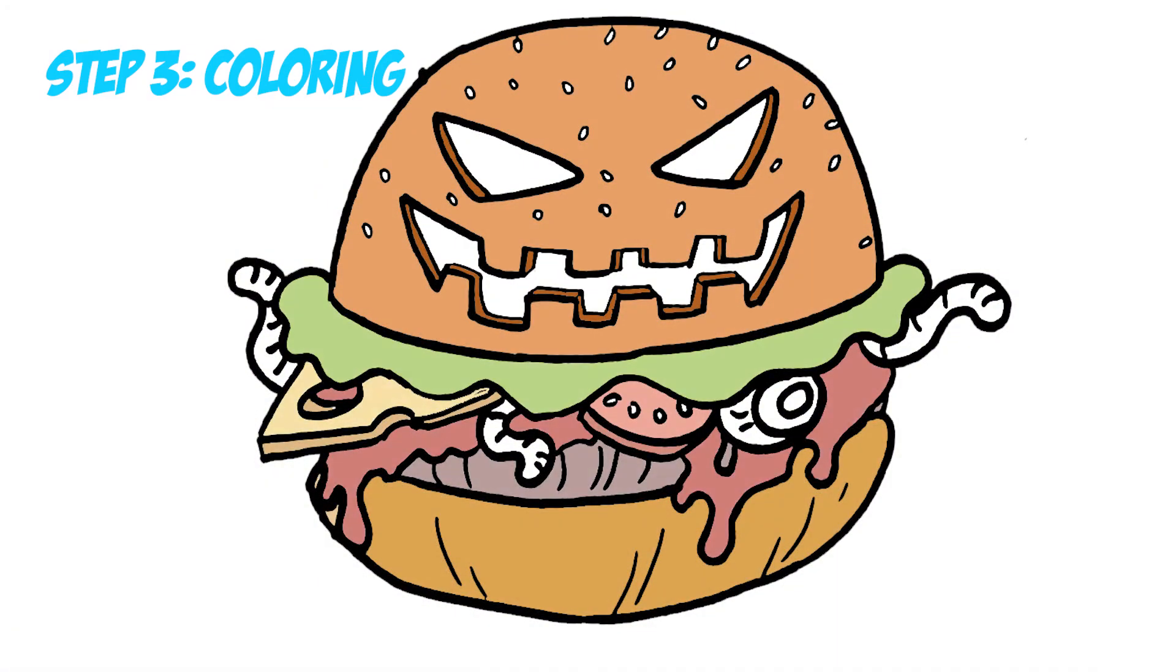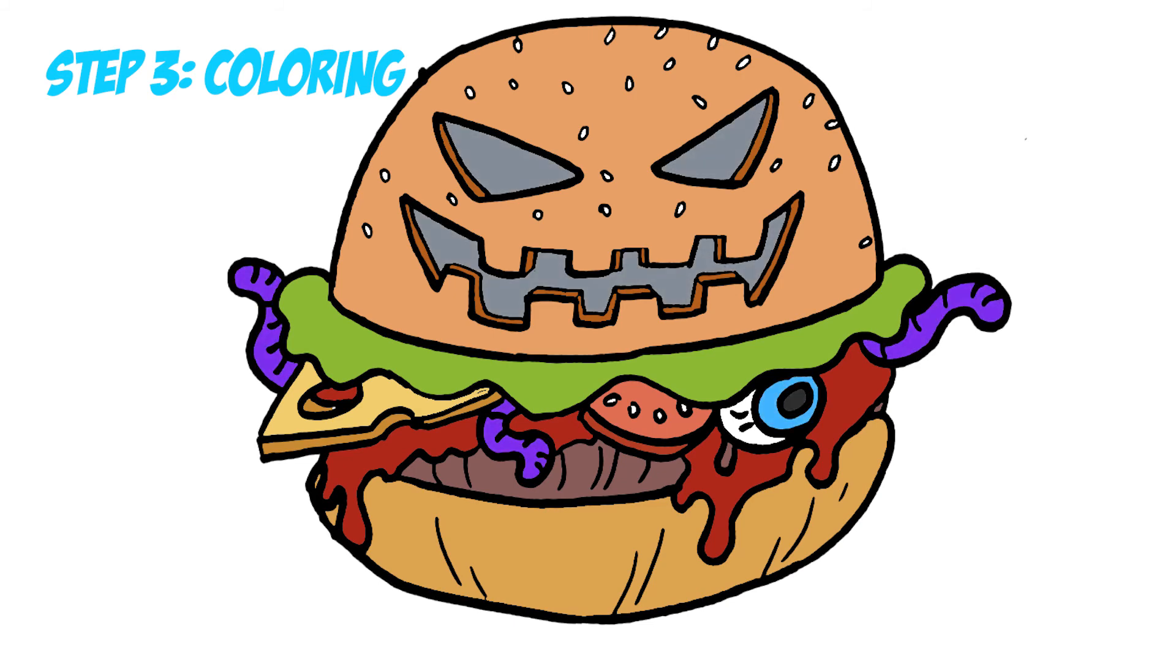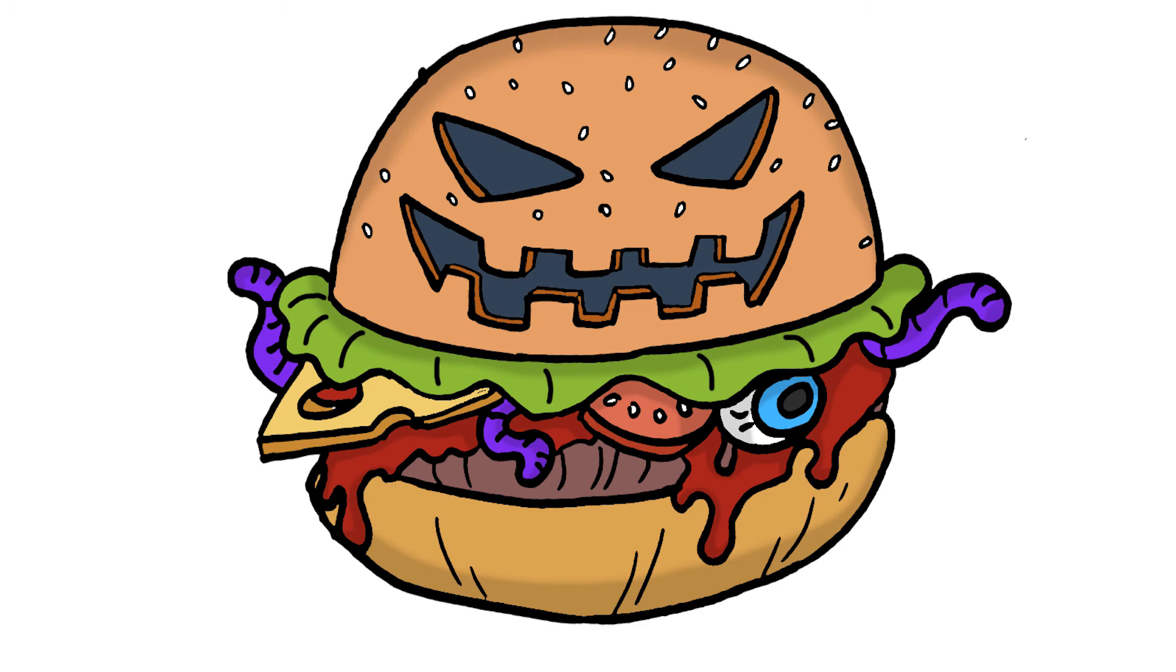I use brown for the hamburger, black for the eyes and mouth, green for the salad, yellow for the cheese, purple for the worm, red for tomato and ketchup, and some blue and white for the eyes. You can pause my video to draw the same color like I do. Thank you for watching my video.